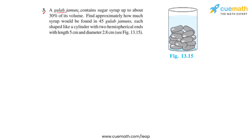Question number three says that a gulab jamun contains sugar syrup up to about 30% of its volume. We have to find approximately how much syrup would be found in 45 such gulab jamuns, each shaped like a cylinder with two hemispherical ends, with length 5 centimeters and diameter 2.8 centimeters. The figure associated with this question is figure 13.15, which shows a jar filled with a certain number of gulab jamuns.